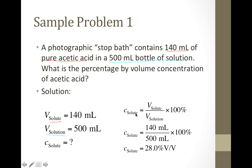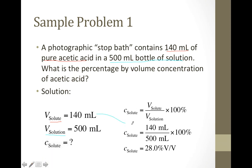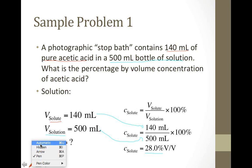The concentration V/V equals volume of solute divided by volume of solution times 100%. Plugging in our values: 140 mL divided by 500 mL, multiplied by 100%, gives us a concentration of 28.0% V/V. We should have a therefore statement at the end.